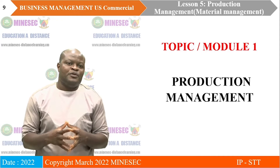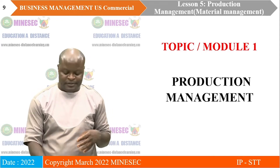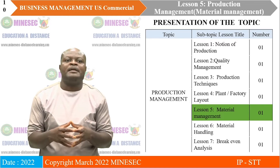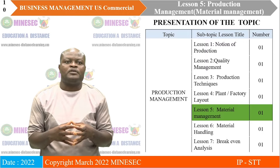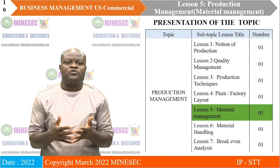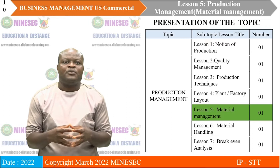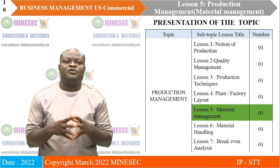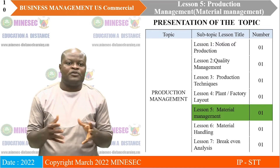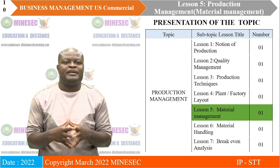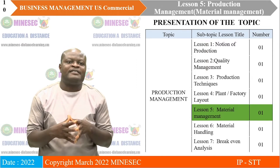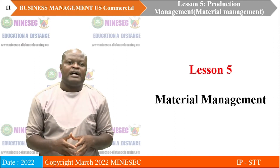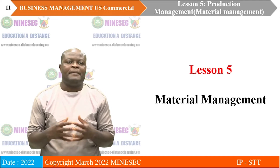We are going to continue with the module on production management. Under this module we have seven main lessons. We have gone through the first lesson on notion of production, quality management, production techniques, and product/factory or plant layout. Today we are going to embark on lesson five, which is material management. Lesson six will be on material handling, and the module will end with break-even analysis.